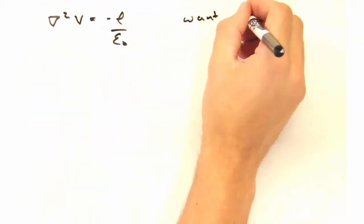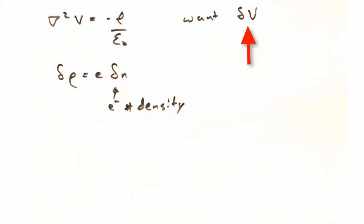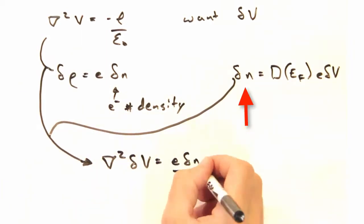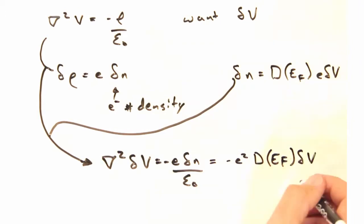But really we want to look at the distortion delta V. So we want the change in charge density, E delta N of R. And luckily we just solved for delta N of R. So we can plug that back in, and we end up with a relatively simple DE.